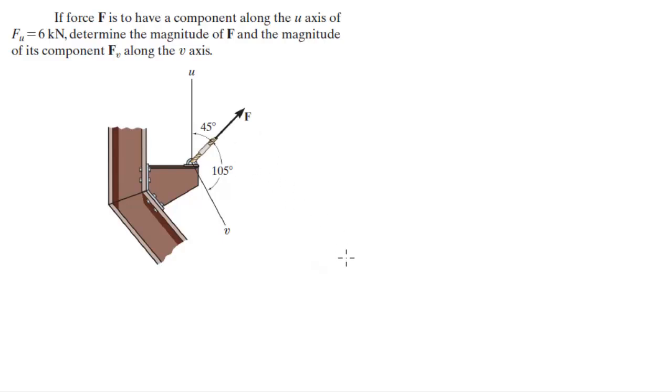So let me redraw this triangle. You got force F right here, which you don't know. And you know that it has a component along U of 6k.